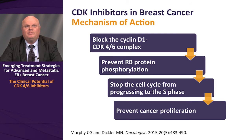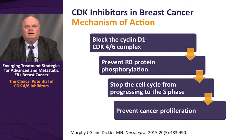There are new competitive inhibitors of this pathway, particularly those that block the CDK4-6 complex and its association with cyclin-D1, thereby preventing the phosphorylation of the RB protein, stopping the cell cycle from progressing to the S phase, and ultimately preventing cancer cell proliferation. These activities of CDK4-6 inhibitors are selective for uncontrolled proliferating cells, such as cancer cells.